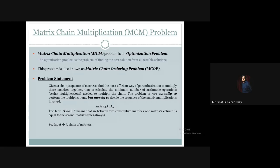So in the Matrix Chain Multiplication problem, the input is a chain of matrices, and the output or goal is a parenthesization of the chain. The objective is to find the parenthesization that results in the minimum number of scalar multiplications needed to multiply the entire chain.